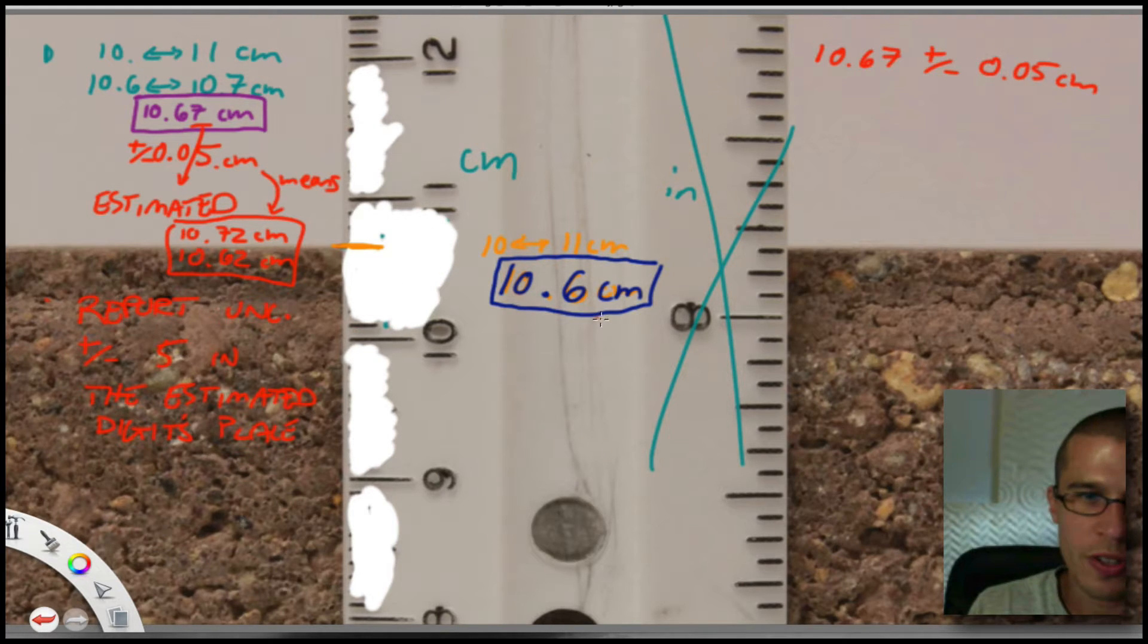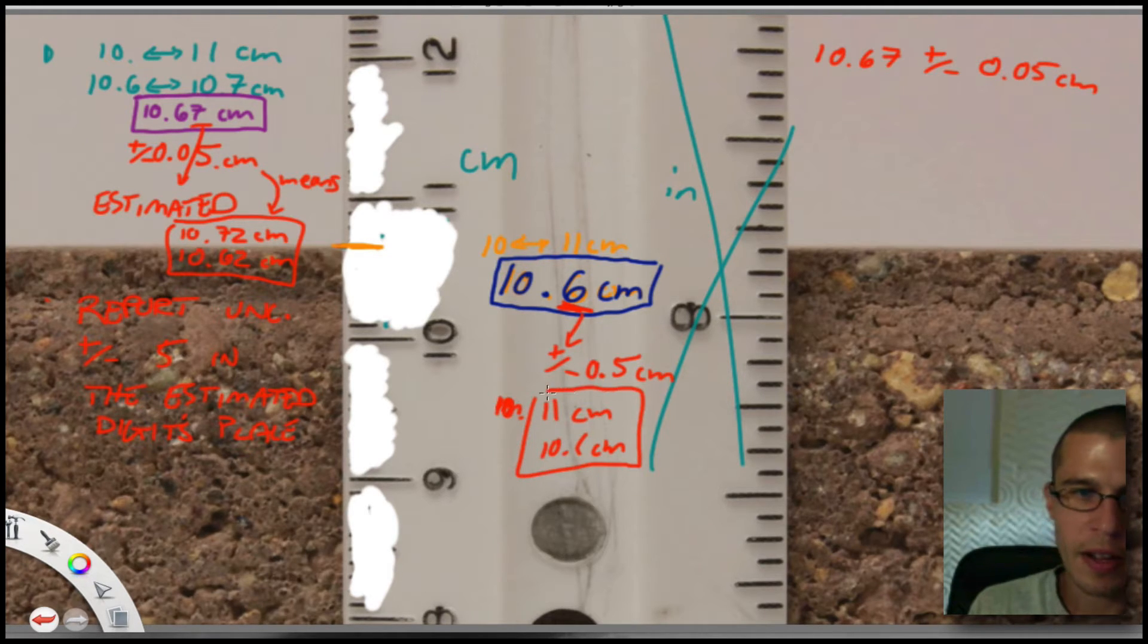So with this last estimated digit here, I can say it's plus or minus five in that last estimated digit. So in this case, it's plus or minus 0.5, it's not 0.05 now, it's 0.5 centimeters. So that means I'm giving myself a range all the way up to 11 centimeters. Wow, that's huge, or down to 10.1 centimeters. That's my range now because of my lack of knowledge with these huge tick marks.